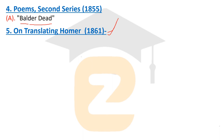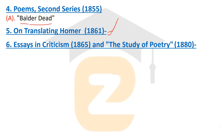On Translating Homer was published in 1861. These were public lectures that Matthew Arnold delivered as Professor of Poetry at Oxford, published as a series under the title On Translating Homer.